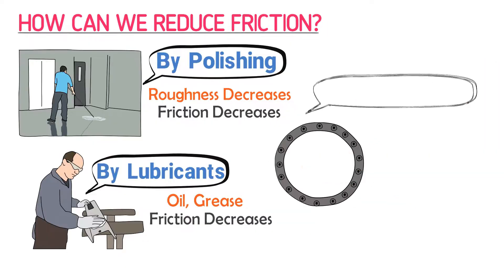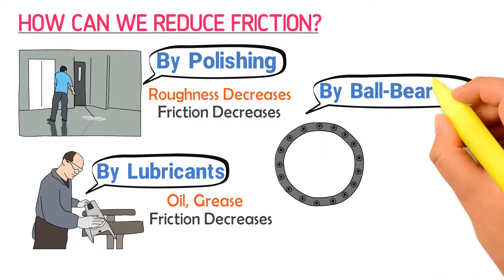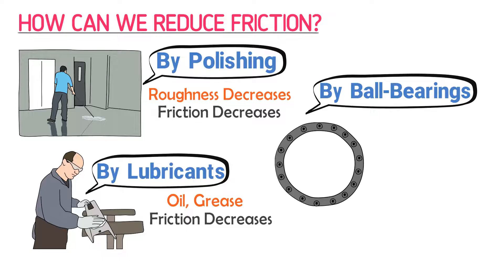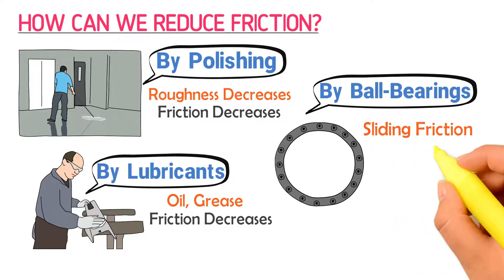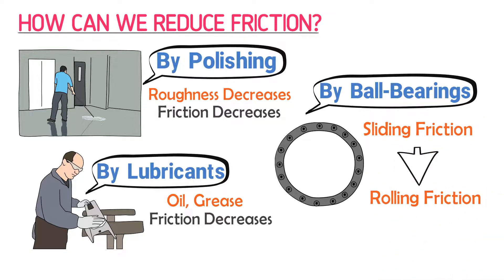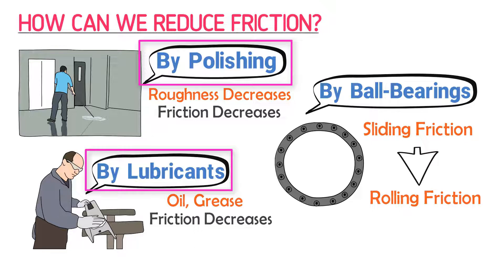Thirdly, by using ball bearings. By this way, we can convert sliding friction into rolling friction. Thus, we can reduce friction by polishing, by applying lubricants, and by using ball bearings.